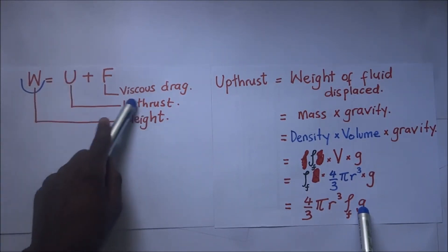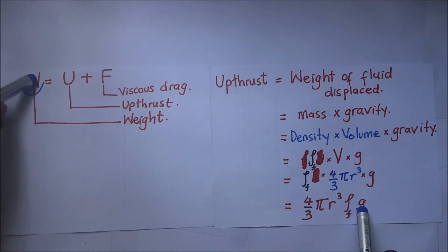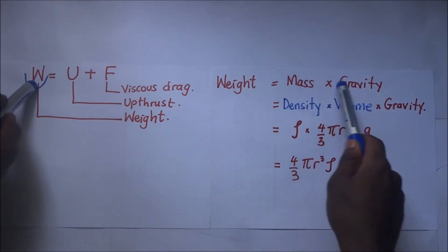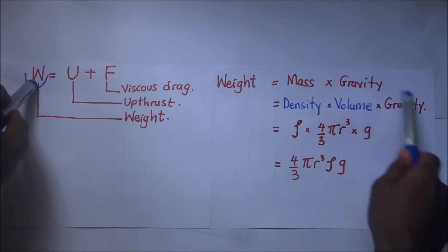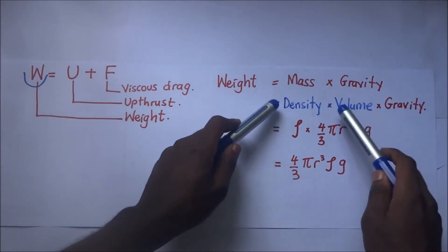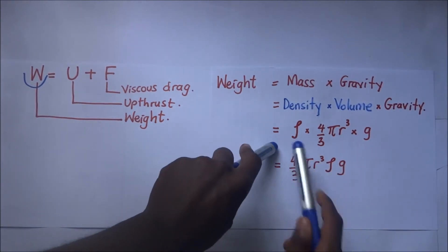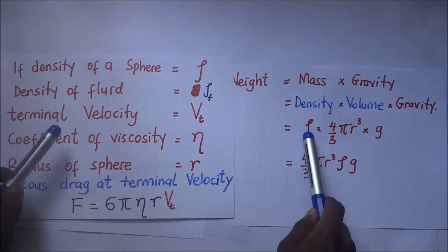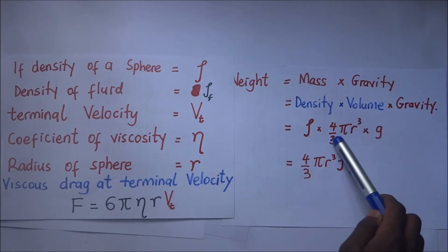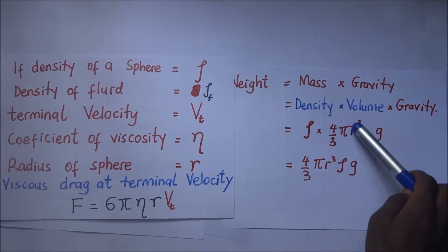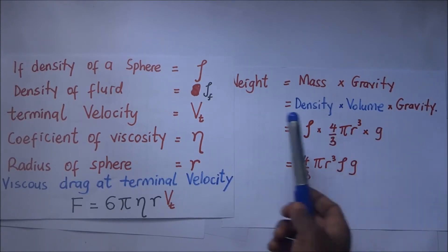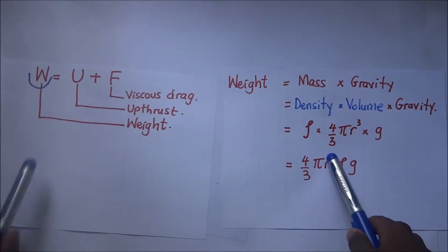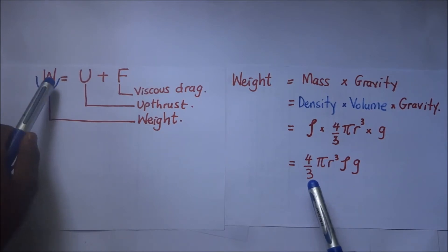For the weight of the sphere, weight equals mass times gravity, and mass equals density times volume. The density of the sphere is ρ, and the volume of the sphere is (4/3)πR³. So the weight of the sphere = ρ × (4/3)πR³ × g. We now have expressions for weight, upthrust, and viscous drag.